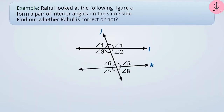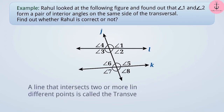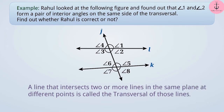Rahul looked at a figure and found that angle 1 and angle 2 form a pair of interior angles on the same side of the transversal. We need to find out whether Rahul is correct. Line J intersects lines K and L at different points, making it a transversal that forms eight angles.